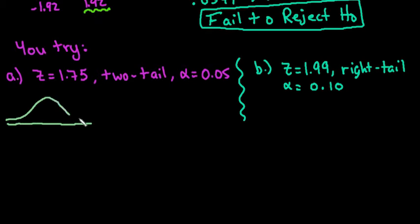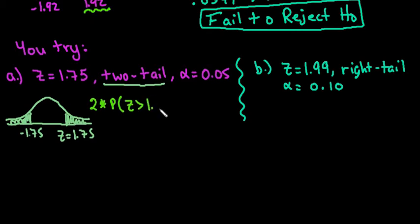I'm going to go ahead and draw my model. Since it's a two-tail test, that means I'm going to shade both tails and then my z-score that this is starting at is 1.75. So down here, it would be negative 1.75. When we set this up, we would say that this is two times the probability that z is greater than 1.75.